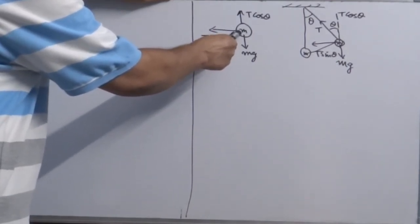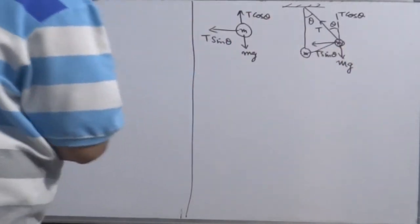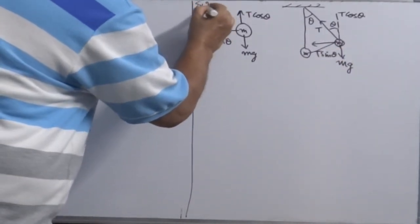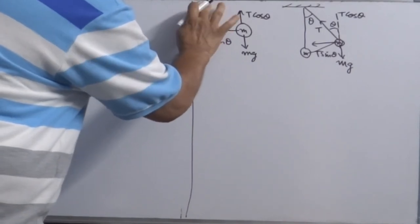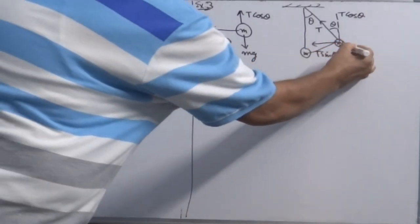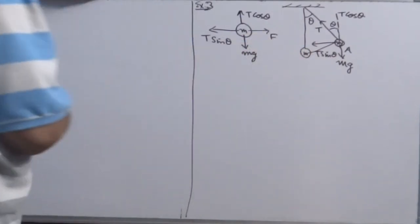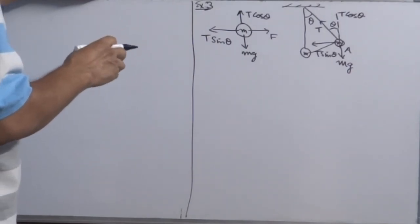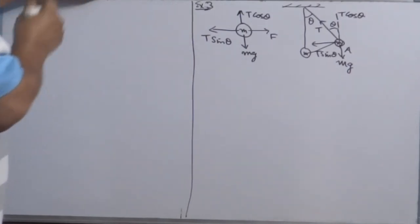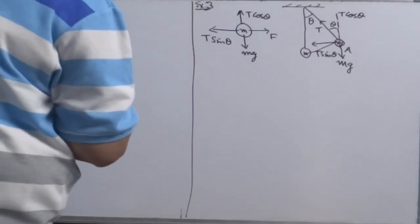But if you say that if question says that it is stationary at point, this is stationary at point A, it means there is another force F is acting this side. To keep an object stationary, the net force on an object should be zero.